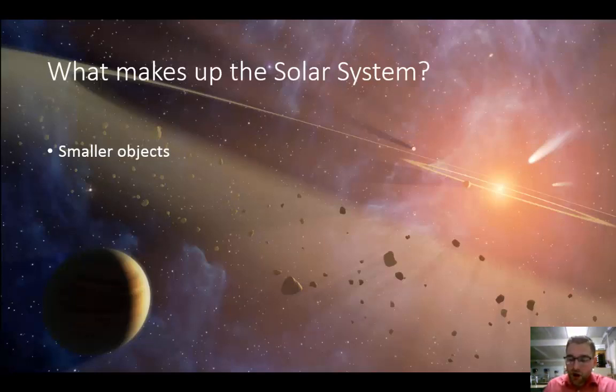The solar system also includes many smaller objects that orbit the sun. Some are called asteroids. They are small, mostly rocky bodies. Many asteroids are found in an area between the orbits of Mars and Jupiter.